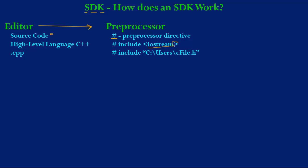There is a reason why there are angular brackets here — this says to look into the standard directory for this header file. If you want to look into another directory, all you would have to do is specify, instead of these angular brackets, just use some quotes. Here you can specify your own directory, like what I have done here: users/cfile.h. In this case, it follows this path and goes to cfile.h and puts all of its content into my source code.